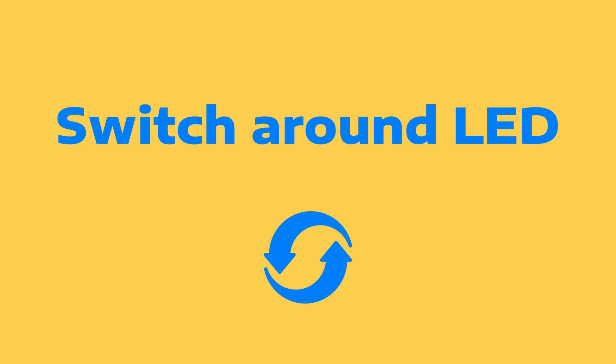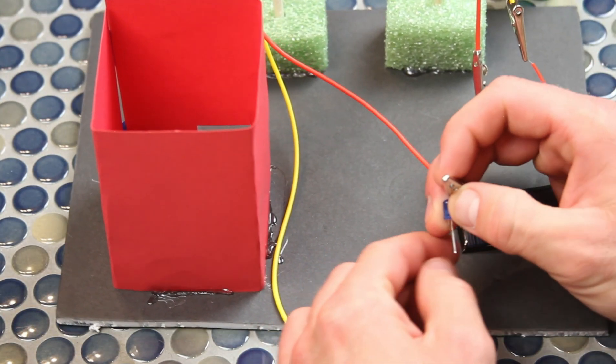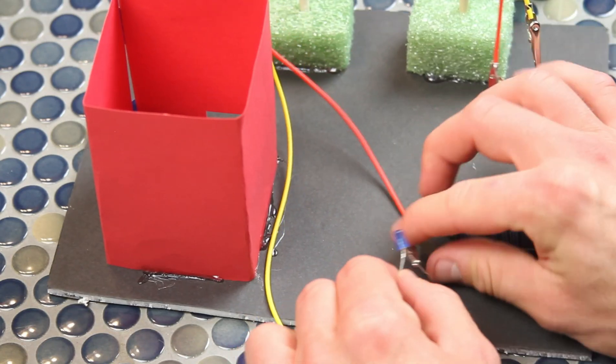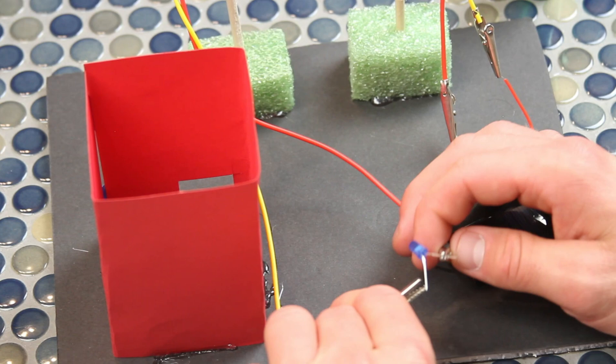This next part still happens to the best of us. Every once in a while, we still forget to put the LED in its proper orientation. If it's not working and you think everything else is correct, try flipping it around and connecting the wires to a different side of it.